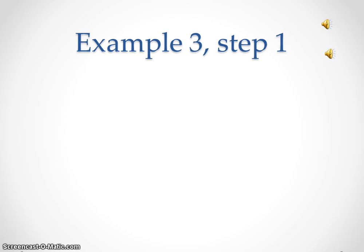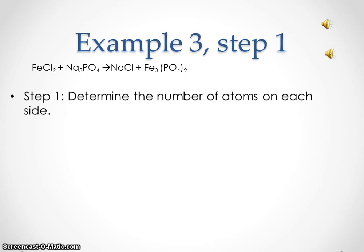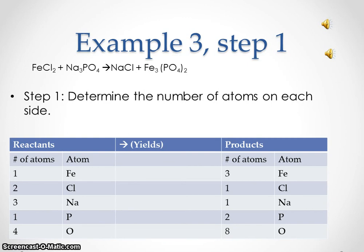Example three, step one. We have iron two chloride plus sodium phosphate yielding sodium chloride and iron two phosphate. Step one: determine the number of atoms on each side. On the reactant side, we have one iron atom, two chlorine atoms, three sodium atoms, one phosphorus atom, and four oxygen atoms. On the product side, we have three iron atoms, one chlorine atom, one sodium atom, two phosphorus atoms, and eight oxygen atoms.